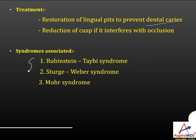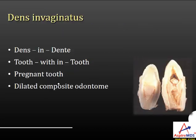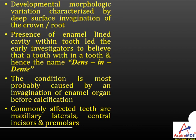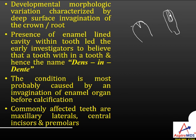The syndromes associated with talon's cusp — important for exams — include Rubinstein-Taybi syndrome, Sturge-Weber syndrome, and Mohr syndrome. Dens invaginatus, also known as dens in dente, tooth within tooth, pregnant tooth, or dilated composite odontoma, is a developmental morphological variation characterized by a deep surface invagination of the crown or root. During tooth formation, invagination takes place within the tooth itself, and this invagination is lined by enamel — giving the appearance of a tooth within a tooth.